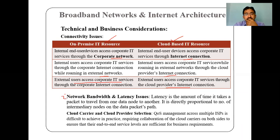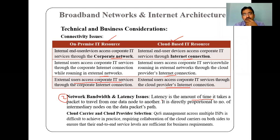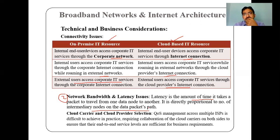The second technical and business consideration is network bandwidth and latency issues. Latency is the amount of time it takes a packet to travel from one node to another — from source to destination via intermediate nodes. It is directly proportional to the number of intermediate nodes on the data packet's path. If the number of intermediate nodes is two, the latency is proportional to two — that much time it takes to transfer a packet from source to destination.